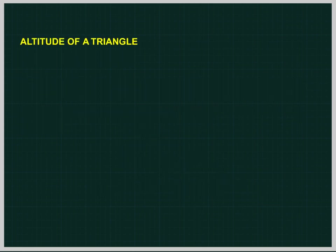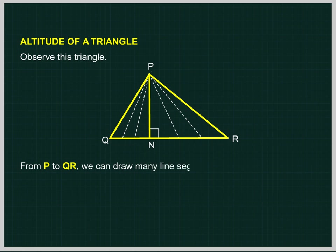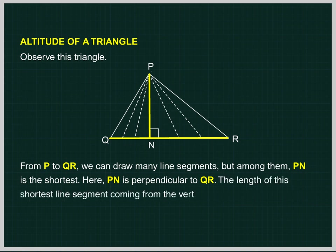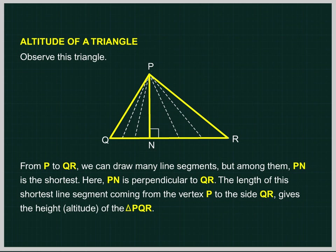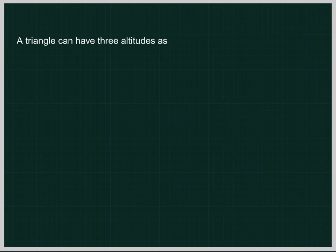Altitude of a Triangle. From P to QR, we can draw many line segments, but among them, PN is the shortest. Here, PN is perpendicular to QR. The length of this shortest line segment coming from the vertex P to the side QR gives the height, or altitude, of the triangle PQR. The line segment PN is called an altitude of the triangle PQR. A triangle has three altitudes.